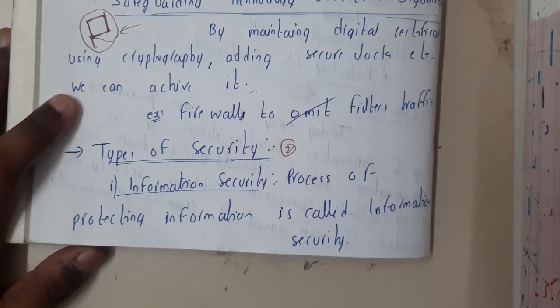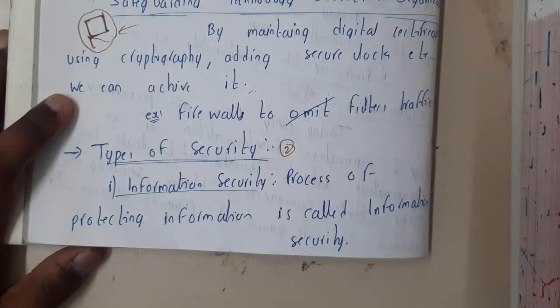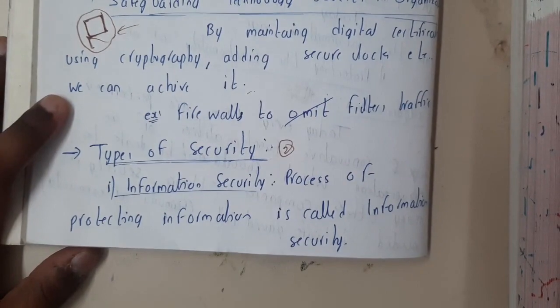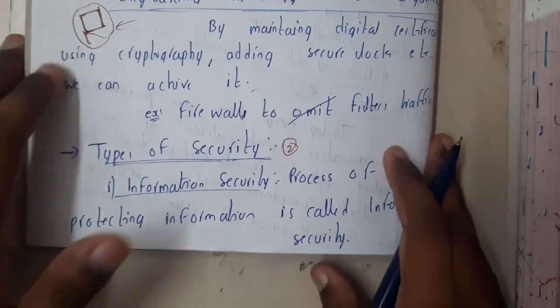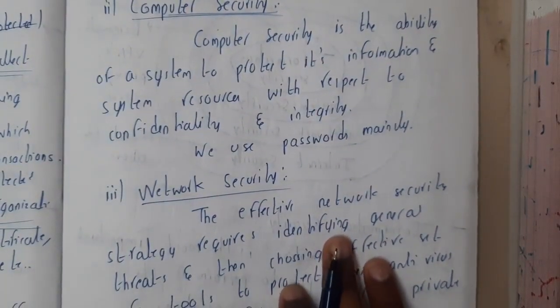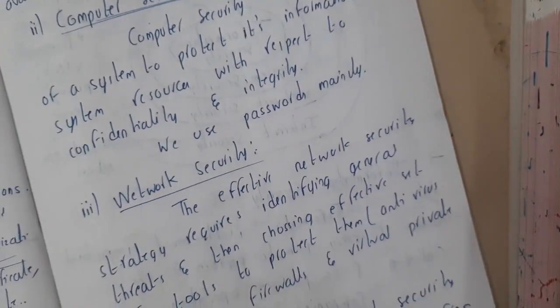In this lecture, let us go through the concept of types of security. Security can be divided into multiple types: information security, computer security, network security, and internet security.